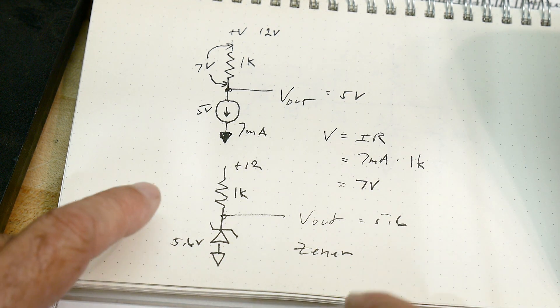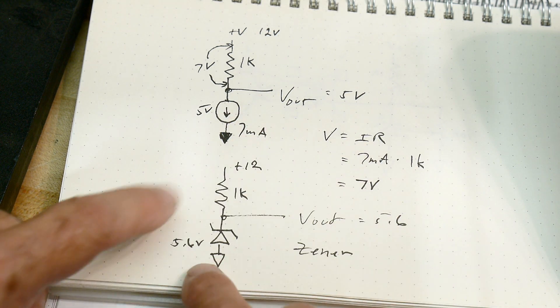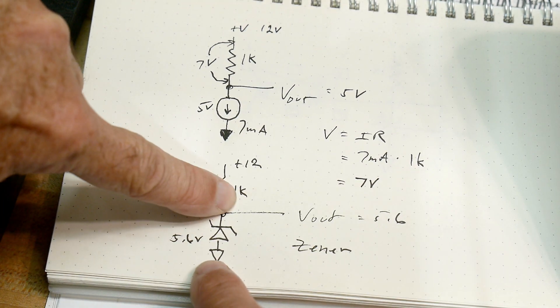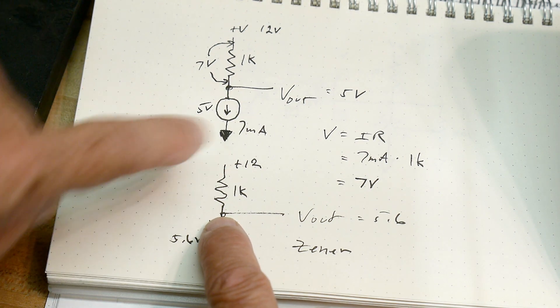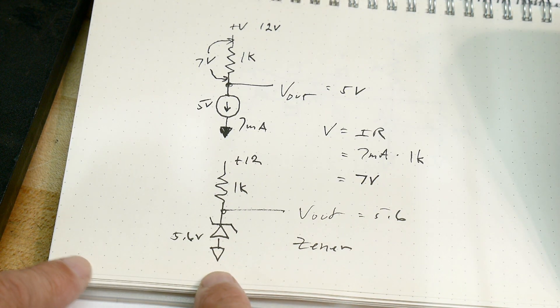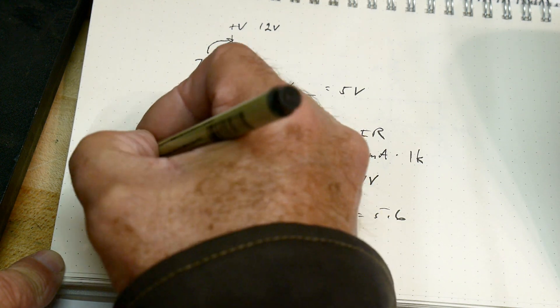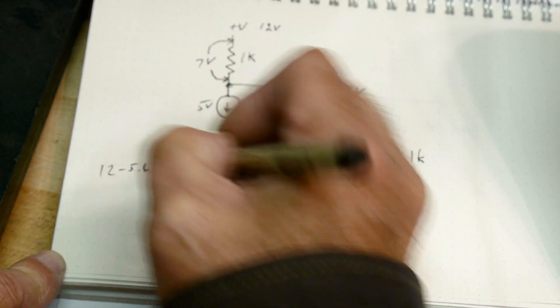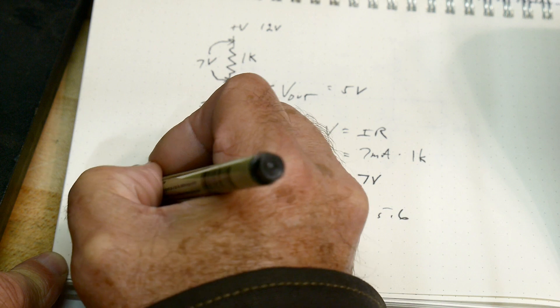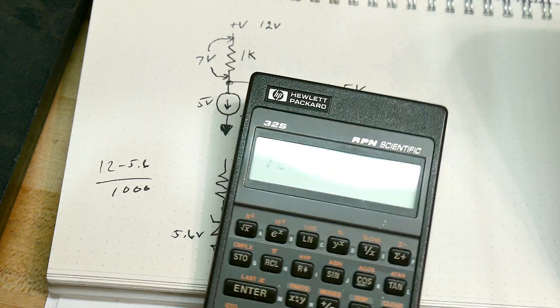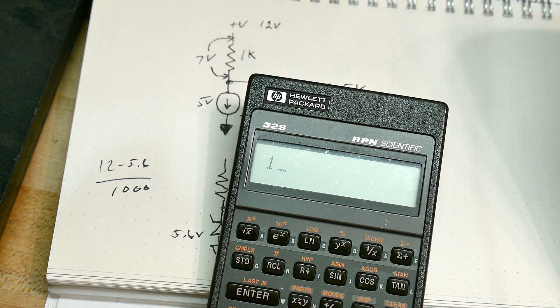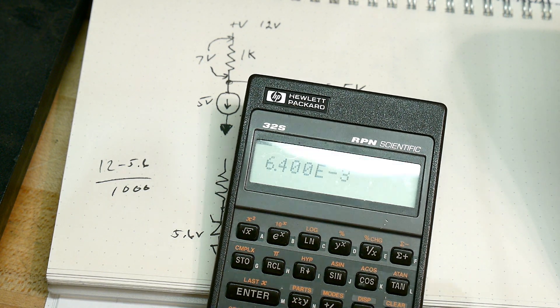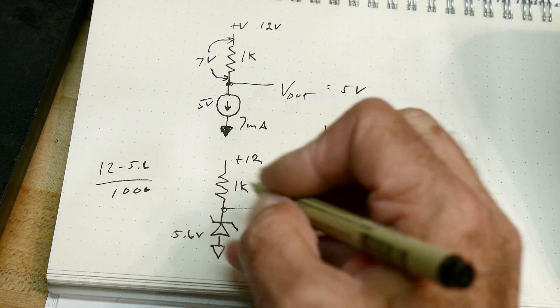So if we have 5.6 across the zener diode, then we have to have 12 minus 5.6 across the resistor. And so we could calculate the total current flow. We would have 12 minus 5.6 divided by 1,000. So 12 minus 5.6 divided by 1,000.